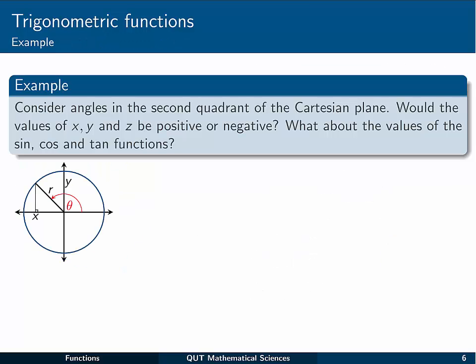Let's take a look at this example that's going to ease us into things. Let's think about angles in the second quadrant of the Cartesian plane, and that situation is given to us here in the diagram. So we're looking at angles theta where theta takes us around into this region of the Cartesian plane, quadrant 2. Pause the video for a moment and write down whether the values of x, y, and r, not z, are positive or negative. Then write down what you think the values of sine, cos, and tan functions would be. Will they be positive or negative?